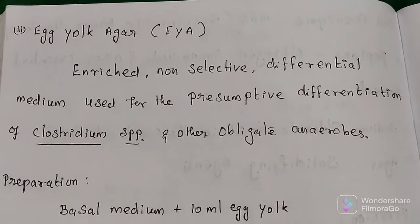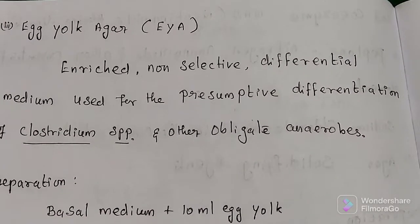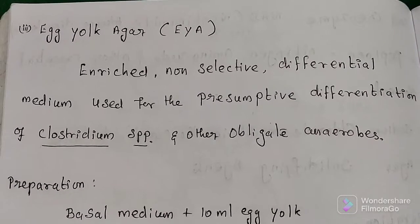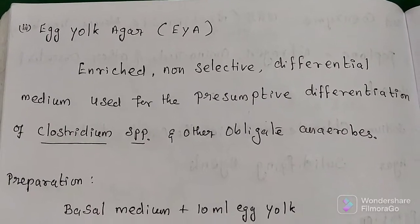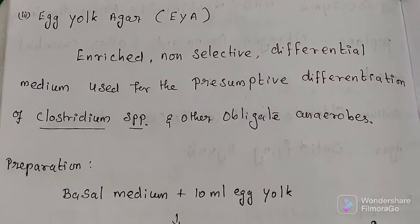Enriched medium, chocolate agar medium, blood agar medium over. Third one is egg yolk agar medium. This one is the enriched medium, enriched non-selective differential medium used for identification of Clostridium species.